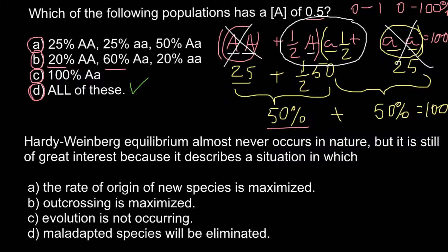Hardy-Weinberg equilibrium almost never occurs in nature, but it is still of great interest because it describes a situation in which: A) the rate of origin of new species is maximized, B) outcrossing is maximized, C) evolution is not occurring, or D) maladapted species will be eliminated. Let's start with answer A.